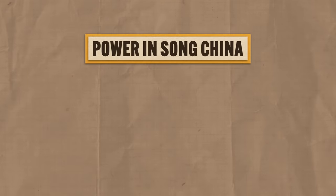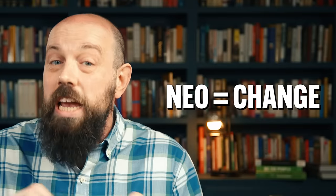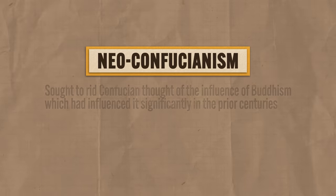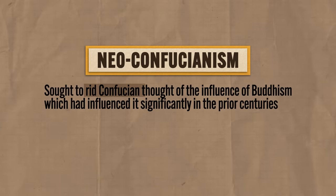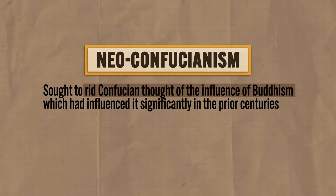First, they maintained and justified their rule by emphasizing Confucianism, a philosophy that defined Chinese culture from its earliest days. While it fell into the background during some previous dynasties, the Song Dynasty carried over a revival of Confucianism from the Tang Dynasty, which came right before the Song. Because it was a revival of an old philosophy, we call it Neo-Confucianism — neo meaning new. The main change you should know is that Neo-Confucians sought to rid Confucian thought of the influence of Buddhism, which had influenced it significantly in prior centuries.